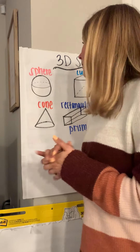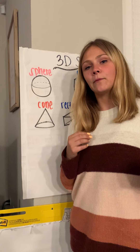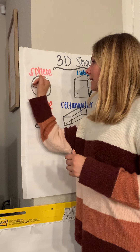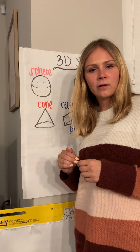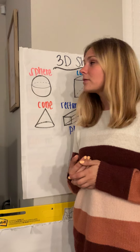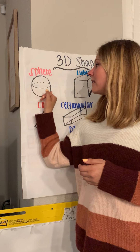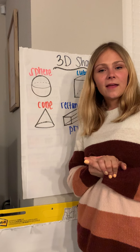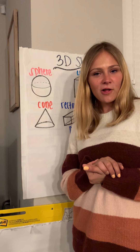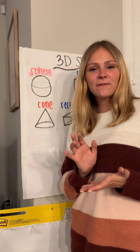The first one we have is called a sphere. A sphere — you have to take your time when you say it out loud, when you pronounce it. A sphere kind of looks like a circle, but we know a circle is a 2D shape. The 3D shape that looks like a circle is called a sphere. You would see a basketball, a soccer ball, or a bouncy ball — those are all spheres.